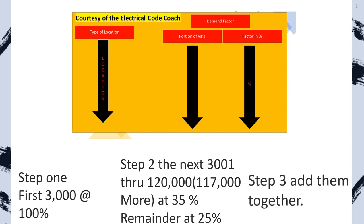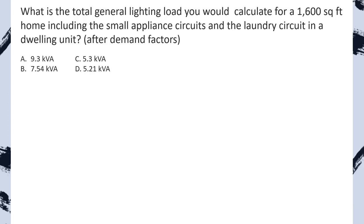Then step three, we add them back together. We take the original 3,000 that we set to the side, then we're going to take that new reduced load, add those two together, and that's going to give us our total load. Now: what is the total general lighting load you would calculate for a 1,600 square foot home, including the small appliance circuits and the laundry circuit in a dwelling unit after demand factors?